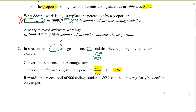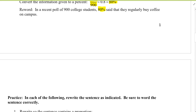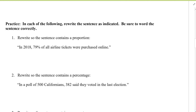Now let's reword it. I want to write it using the word 'percentage' in my sentence. So: 'In a recent poll of 900 college students, 80% said that they regularly buy coffee on campus.' Let's do some practice.